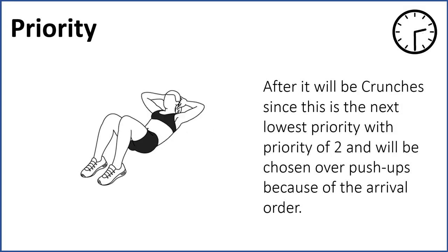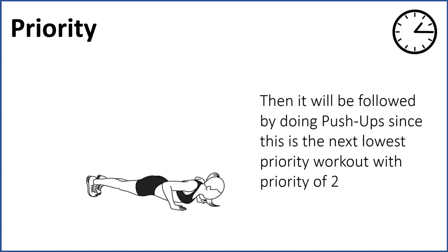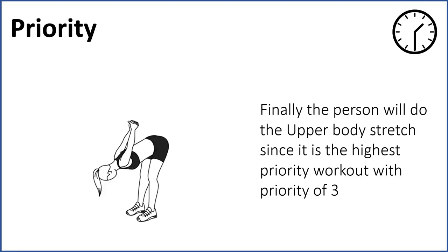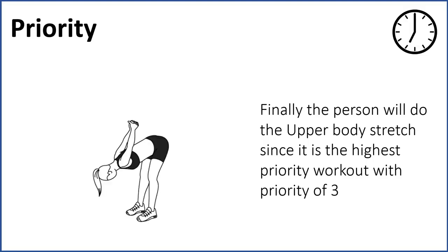After that, it will be crunches since this has the next lowest priority value of two, and it will be chosen over push ups because of the arrival order. Then it will be followed by push ups, which is also priority two. Finally, the person will do upper body stretch since it has the highest priority value of three.